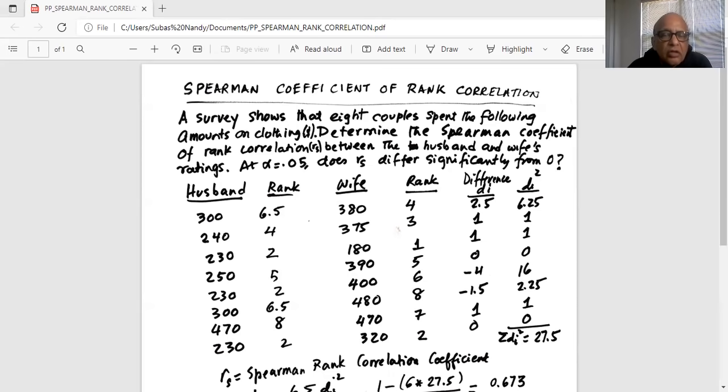So one, two, three are gone. The next number in husband is 240, it gets a ranking of four. The next one is 250, it gets a rank of five. And then there are two three hundreds which consume the rank of six and seven. Six plus seven is 13, 13 divided by two is 6.5.